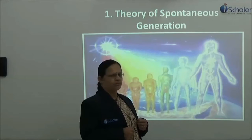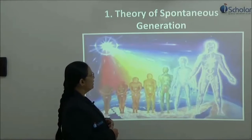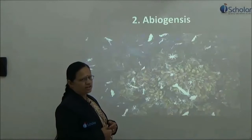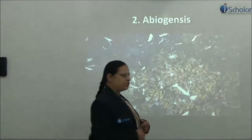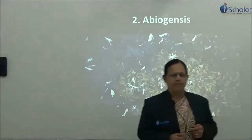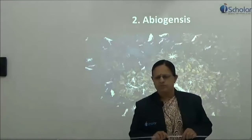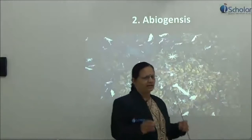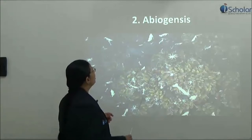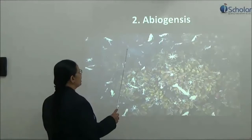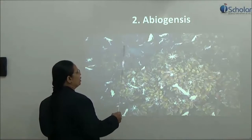This theory was not universally accepted because it is highly religious. Later, Aristotle put forward the theory of abiogenesis — how life comes from non-living things. 'A' means absence of life, so it is life coming from a non-living thing. Here you can see the worms and insects.